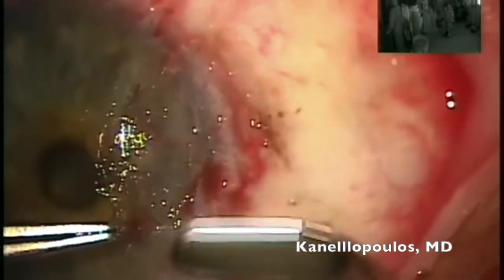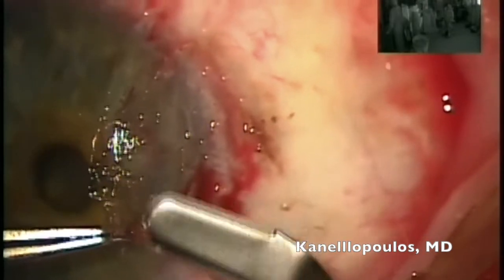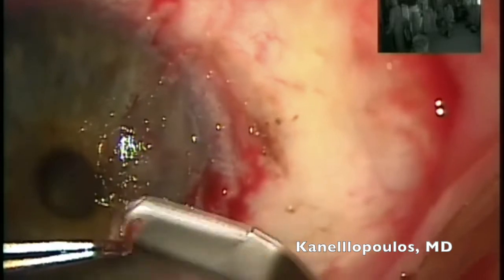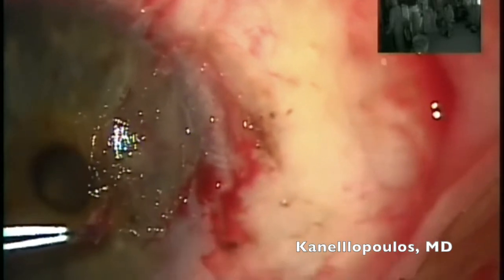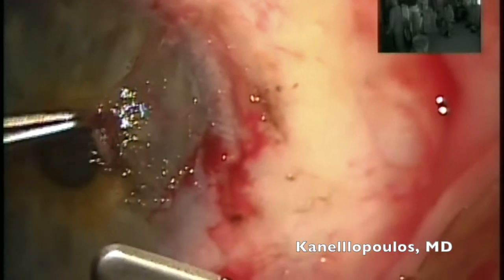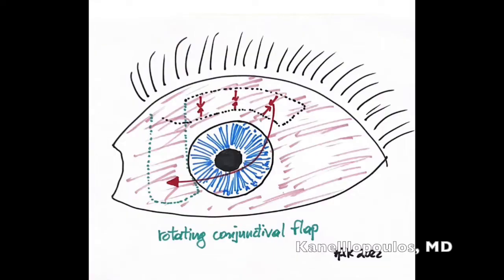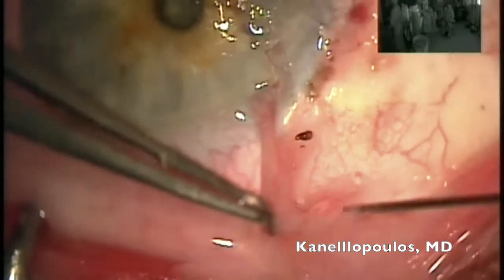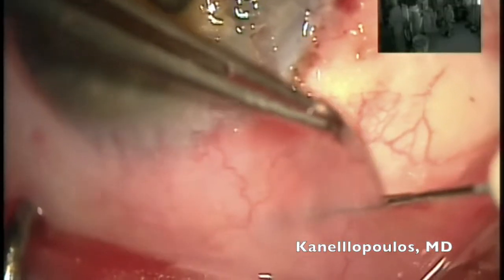Very careful here — it's very easy with this maneuver with my crescent blade to end up in the anterior chamber, which is definitely not our aim. Now we're going to cover that deficit with a rotating flap of conjunctiva that we're going to harvest from the superior aspect of the eye.